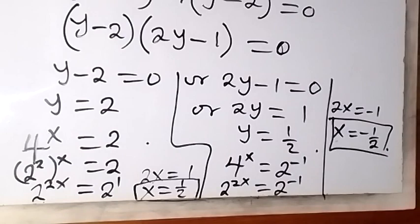So we got x equals 1 over 2 and x equals minus 1 over 2. This is the end of the solution. Thank you for joining us. Subscribe to this channel for more videos. See you in the next class.